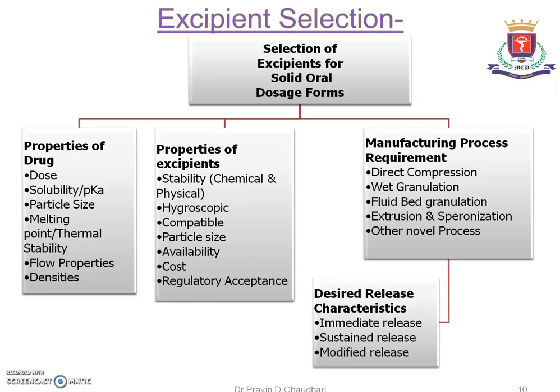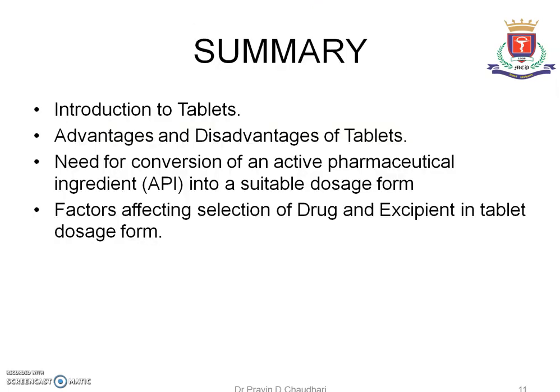Desirable characteristics of excipients are also an important factor taken into consideration when selecting excipients. If immediate release is required, certain super-disintegrants which disintegrate the tablet rapidly are used. For sustained release, some polymers are used for sustaining drug release. For modified release — like pulsatile release and others — the drug release is modified as per the desired therapeutic effect.